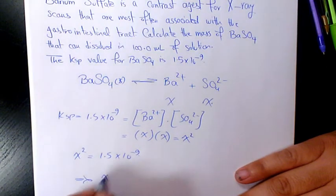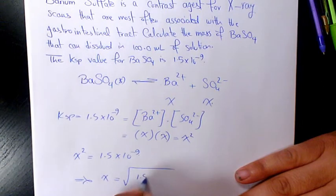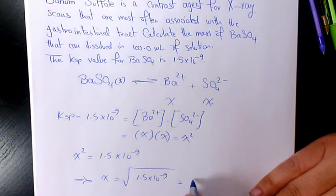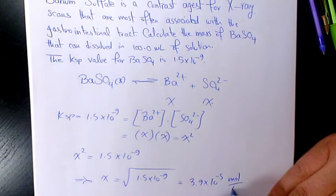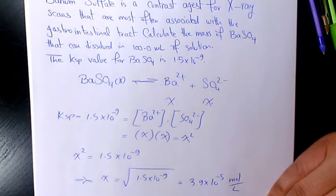It means that x will be square root of 1.5 times 10 to the power of negative 9, which will be 3.9 times 10 to the power of negative 5 mole per liter. That's gonna be the molar solubility.